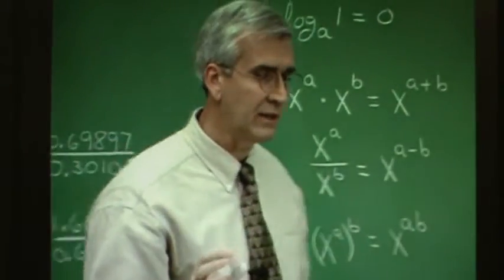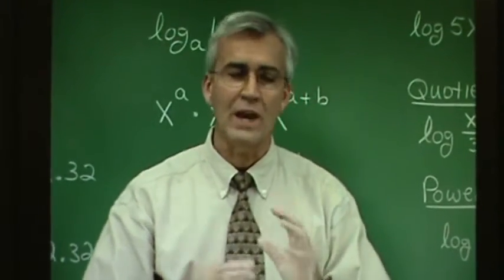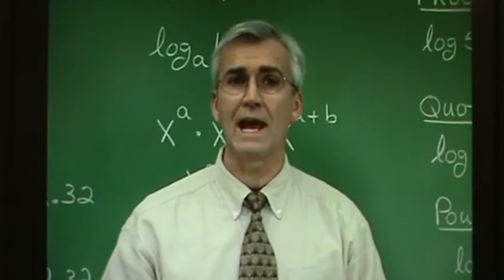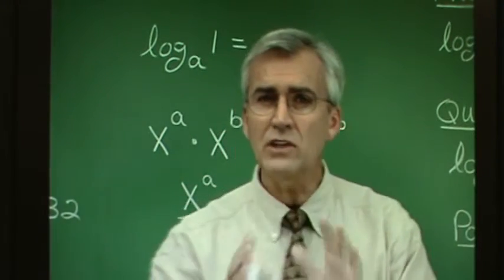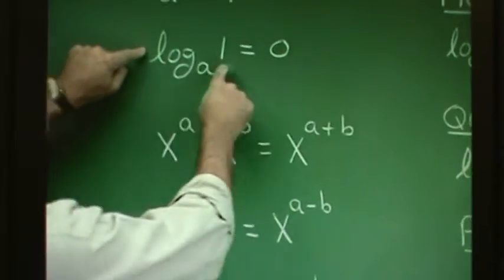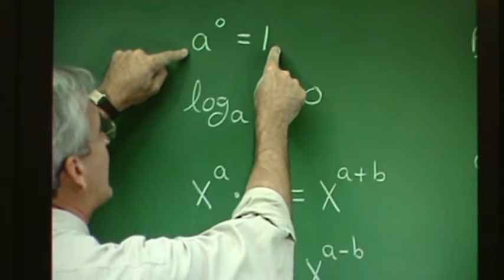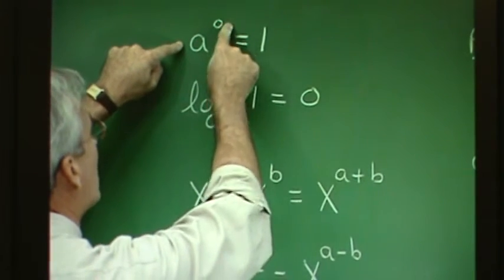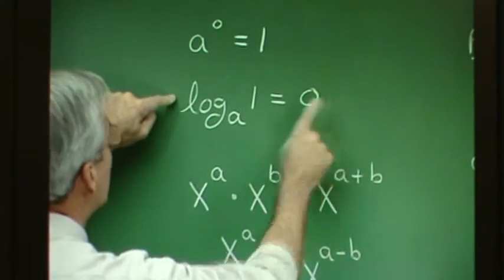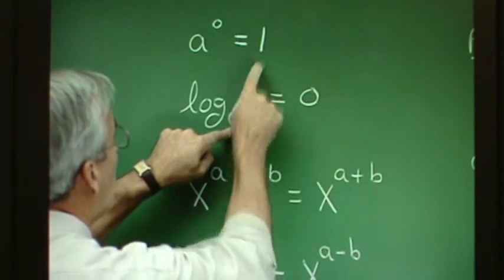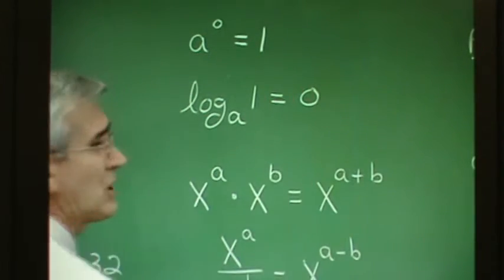We may realize at this point, looking from several perspectives, that many of our properties involving logarithms have as their basis some idea in the exponential world. Something like the log of 1 being equal to 0 — we know this is true because a to the 0 equals 1. In the exponential world, you take a base, raise it to the 0 power, and you always get 1. Change that to the logarithmic world and we have base, exponent, 1. No wonder this works — it has a basis in the exponential world.